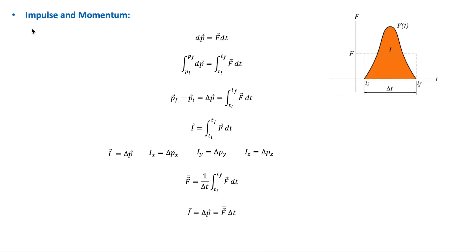We will now discuss the concept of impulse. Impulse is a quantity that defines how a certain force acting on a particle changes the linear momentum of that particle. Considering a time-dependent force acting on a particle, from Newton's second law we have dp equals F dt. Integrating both sides gives the impulse-momentum theorem. The impulse, a vector quantity, equals the change in momentum of the particle as a result of that force.